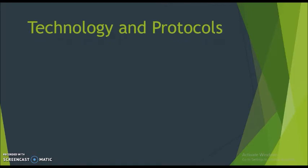Technology and protocols: IoT primarily exploits standard protocols and networking technologies. The major enabling technologies and protocols of IoT are RFID, NFC, low energy Bluetooth, low energy wireless, low energy radio protocol, LTE-A, and Wi-Fi Direct. These technologies support the specific networking functionality needed in an IoT system, in contrast to a standard uniform network.